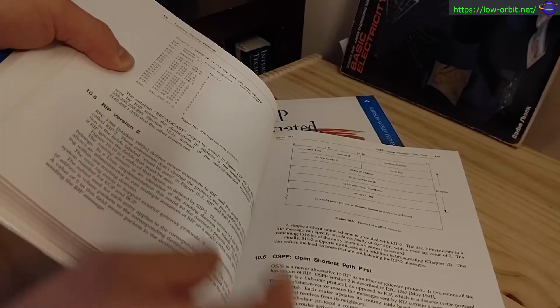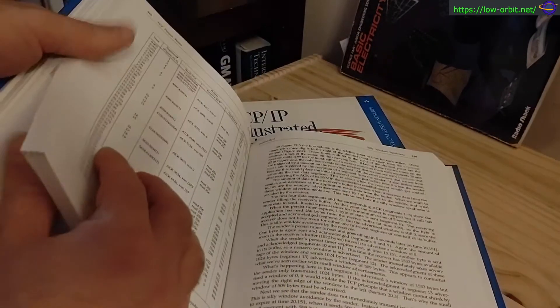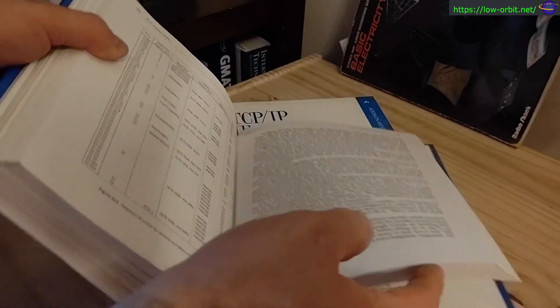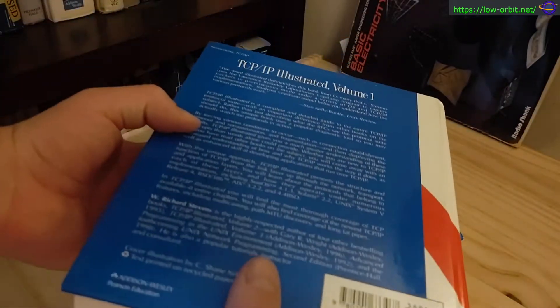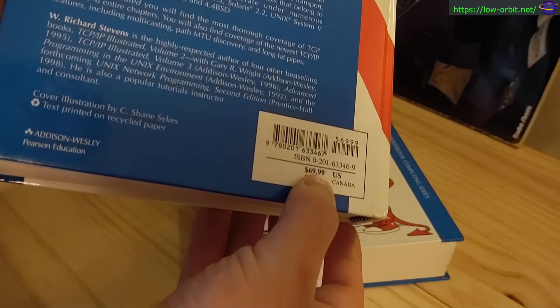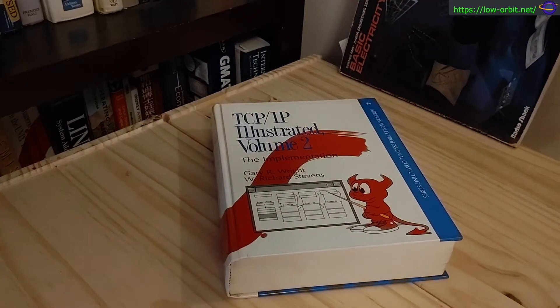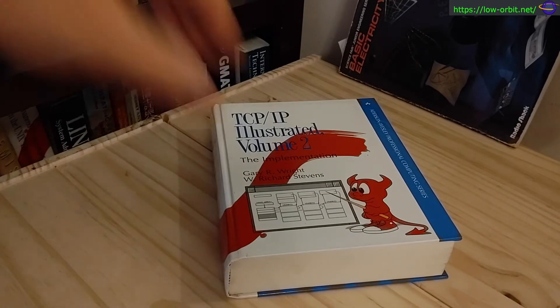For example, they have the RIP routing protocol. They just go over a bunch of protocols and how they work. That's volume one. At the time it was going for almost 70 US dollars. I have no idea what it goes for today.